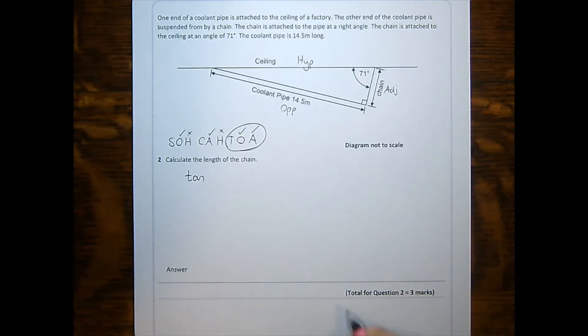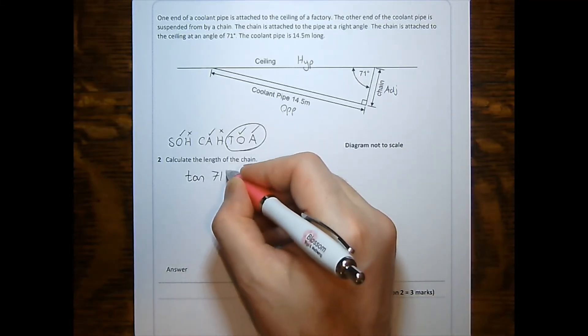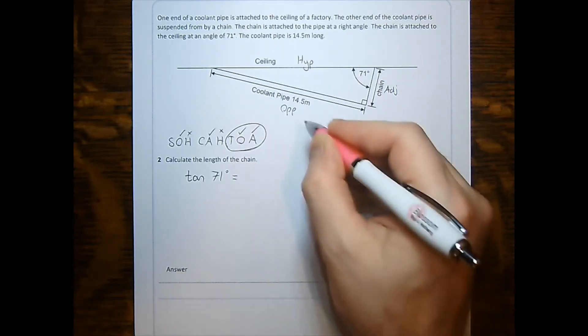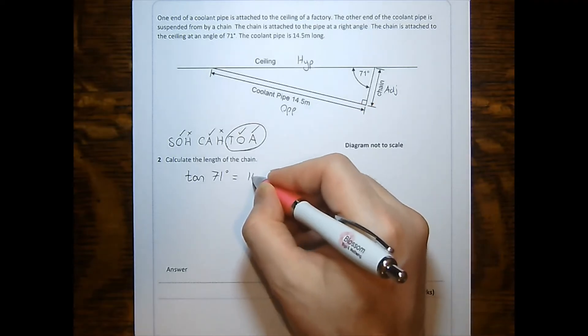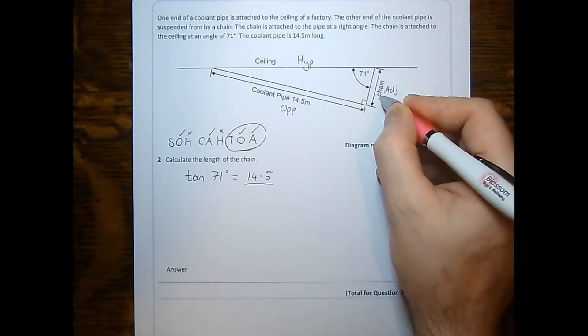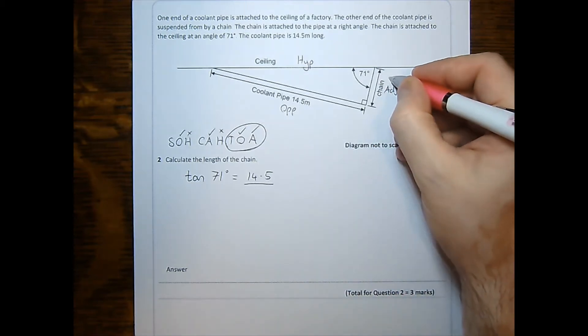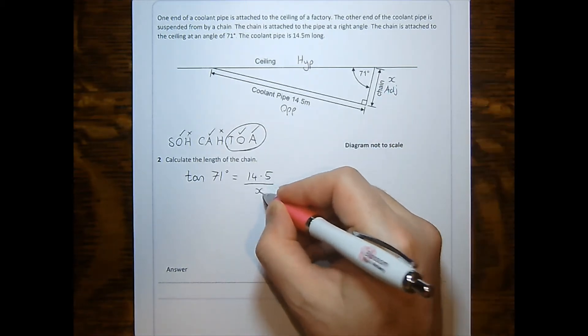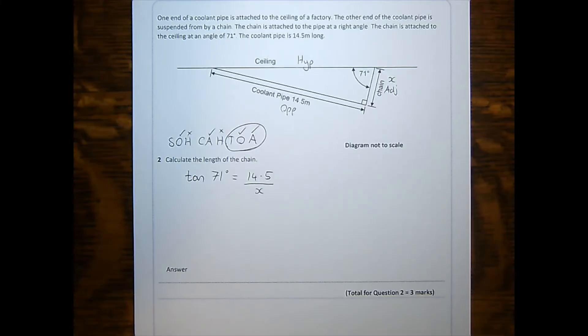Tan of the angle, 71 degrees, is equal to the opposite of 14.5 meters divided by the adjacent, which is our unknown. I'll call that x just for handling it in the algebra here. That's my substitution for my first mark.